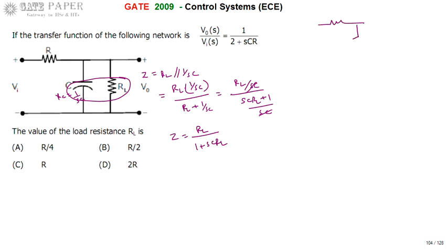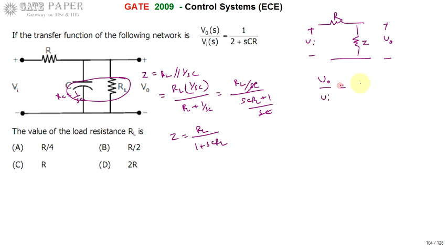Now the network looks like a resistor R followed by impedance Z, with output V0 and input VI. The transfer function V0/VI can be written as Z/(R + Z).